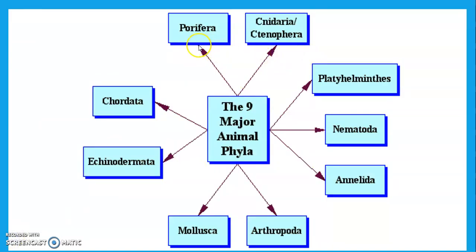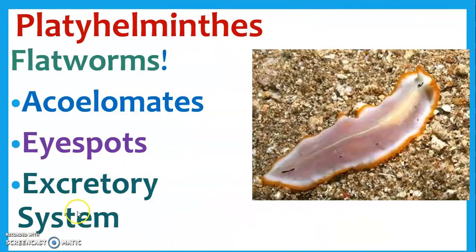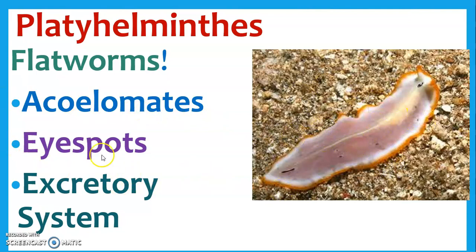So we've knocked out two phyla — you can see a little bit of progression, now we've got a nervous system. These next ones are all going to be worms. Platyhelminthes is the first phylum of worms — these are flatworms. You've seen these before; these are the ones you can cut in half and sometimes they'll grow back, depending on the species. They have eye spots, so now we're starting to get things that can see, plus an excretory system. You can see a little progression of evolution.